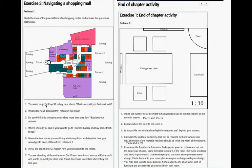Exercise 3: Navigating a Shopping Mall. This is a map of a shopping mall. You want to go to Shop 37 to buy shoes. What store will you find next to it? What does G51 Woods mean on this map? Do you think the shopping center has more than one floor? Explain your answer. Where should you park if you want to go to Fourno Bakery to buy some fresh bread?